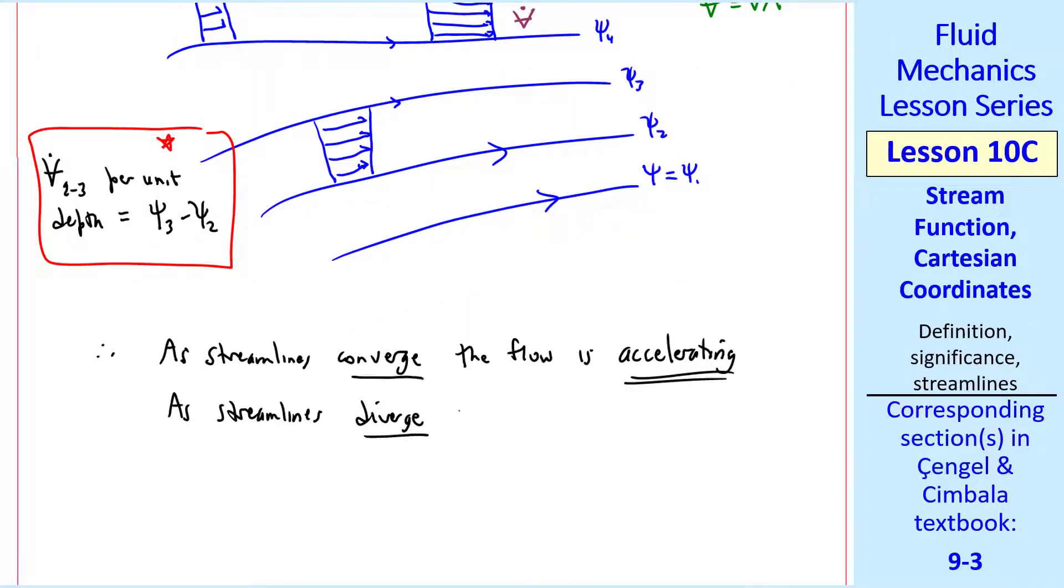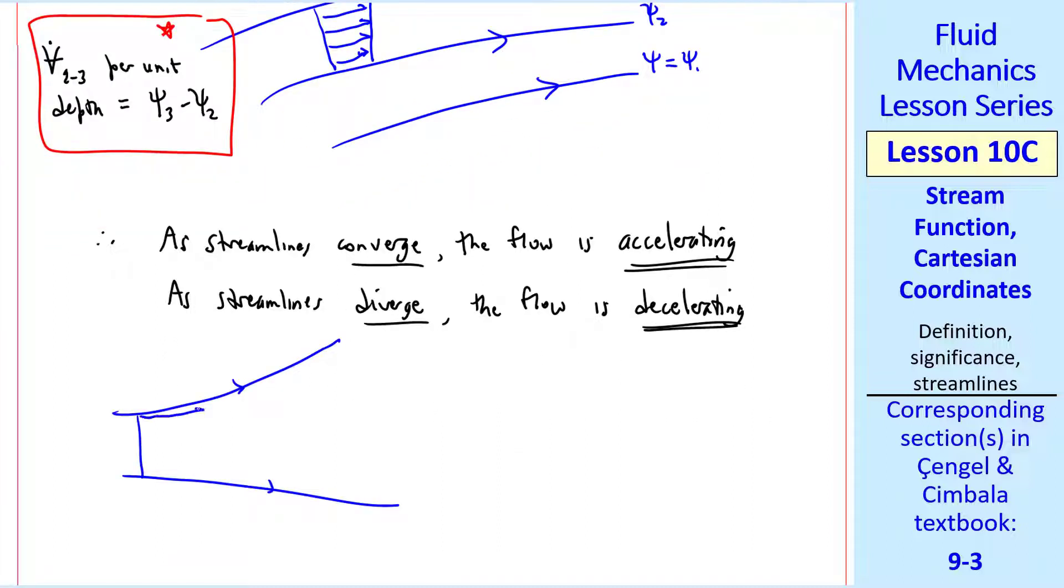As streamlines diverge, the flow is decelerating, which is the opposite case. If this is the velocity profile on the left, we would expect the flow to slow down since these two streamlines are diverging. But V dot per unit width between these two streamlines is equal to the difference between psi of the two streamlines. And that volume flow rate is the same at any location between these two streamlines.